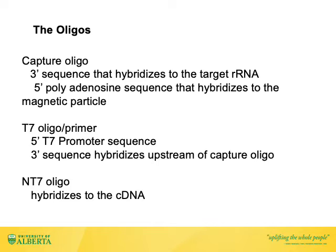The assay uses three oligos. The capture oligo has a 3' end that hybridizes to the target RNA and a 5' end that hybridizes to a magnetic particle. The T7 oligo primer has a 5' end with a T7 promoter sequence, and its 3' end hybridizes upstream of the capture oligo. The third oligo is the non-T7 (NT7) oligo, which hybridizes to the cDNA made by the reverse transcription reaction.